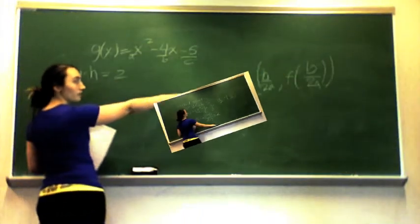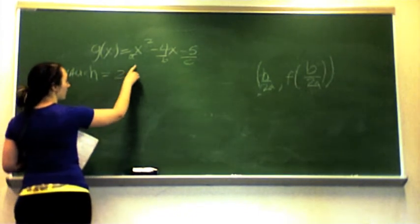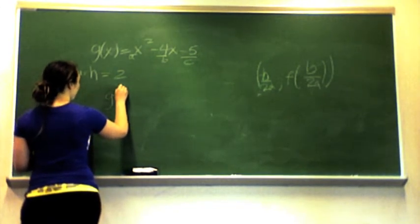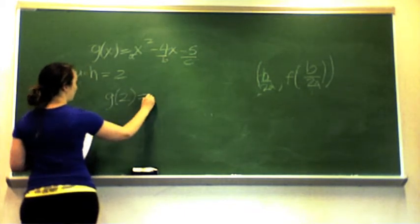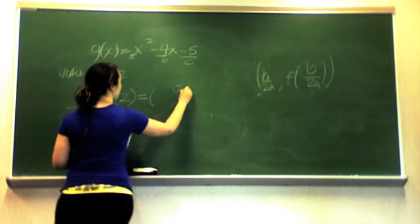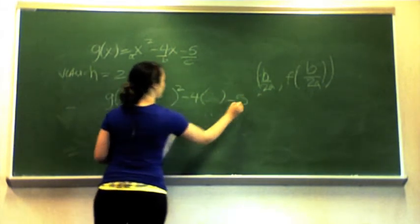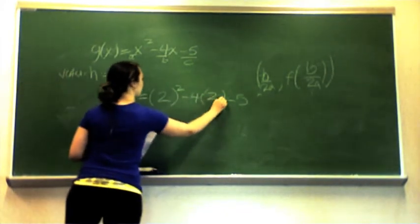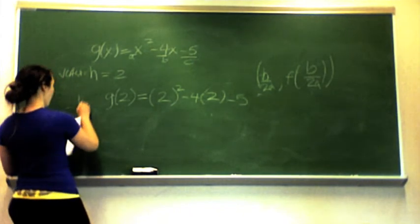Now we're going to find our k, which is the function evaluated at b over 2a, meaning we plug h back into the equation. So we're going to take our equation g(x) and plug in 2 where there is an x. And from here we solve to get our k.